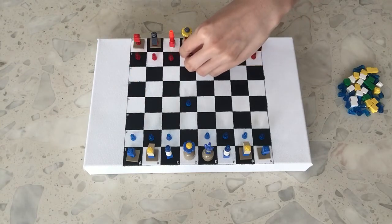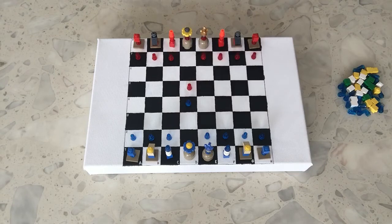And each turn alternates with blue then red, and it goes on until the first player checkmates their opponent's king.